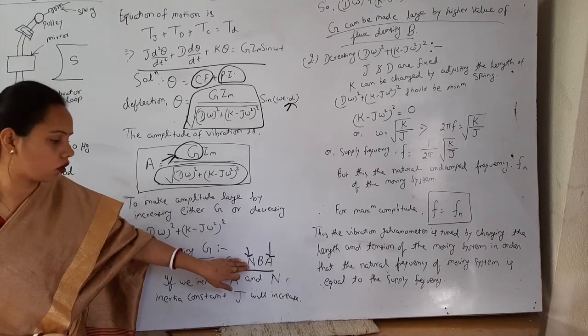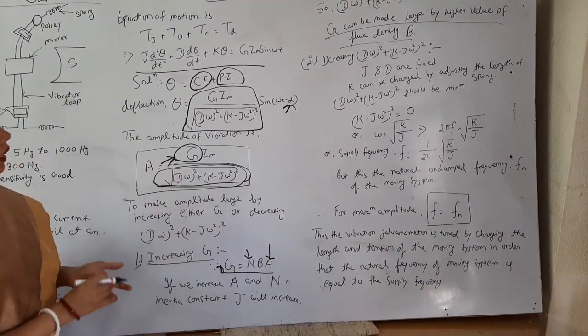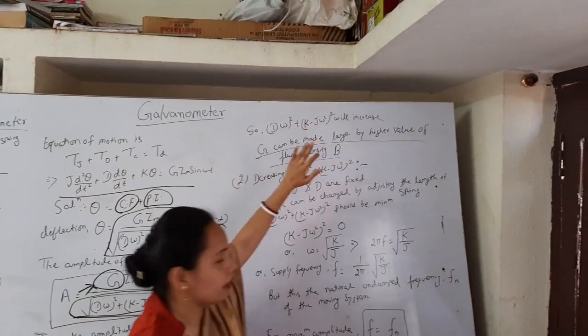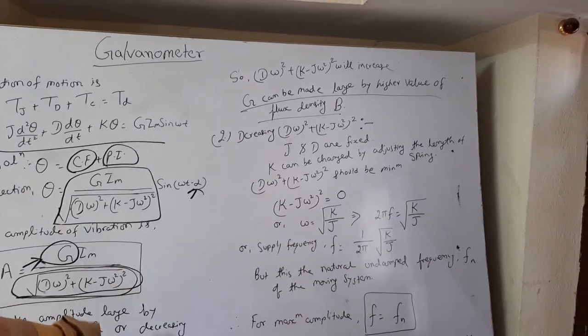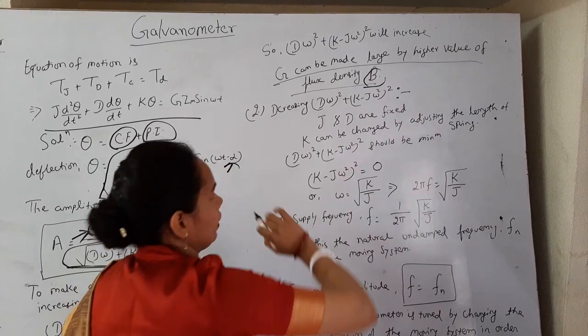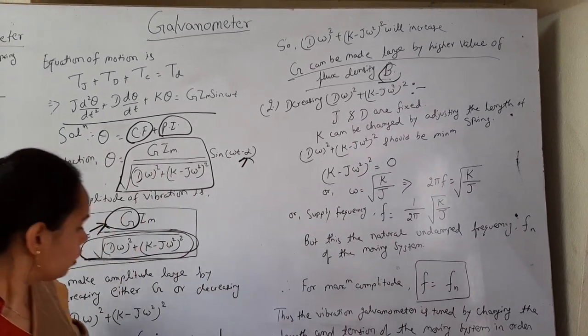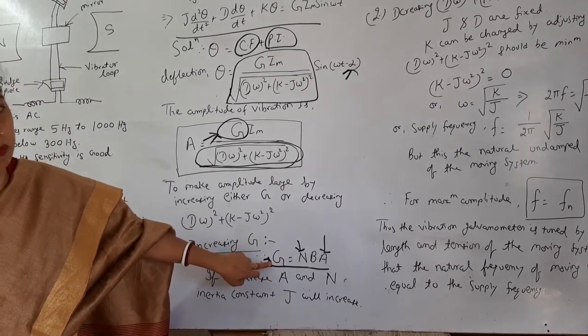Number of turns is increased and area increased, then G is also increased, as is the moment of inertia constant. So this value should also be increased because J is there. So we cannot control number of turns and A. So we have to only control the flux density. As if we make flux density higher, then G will be higher.